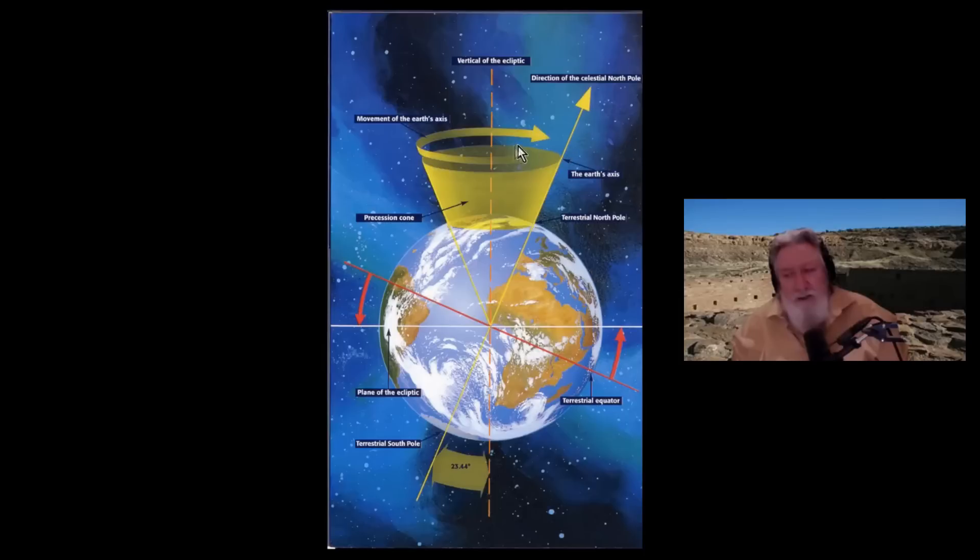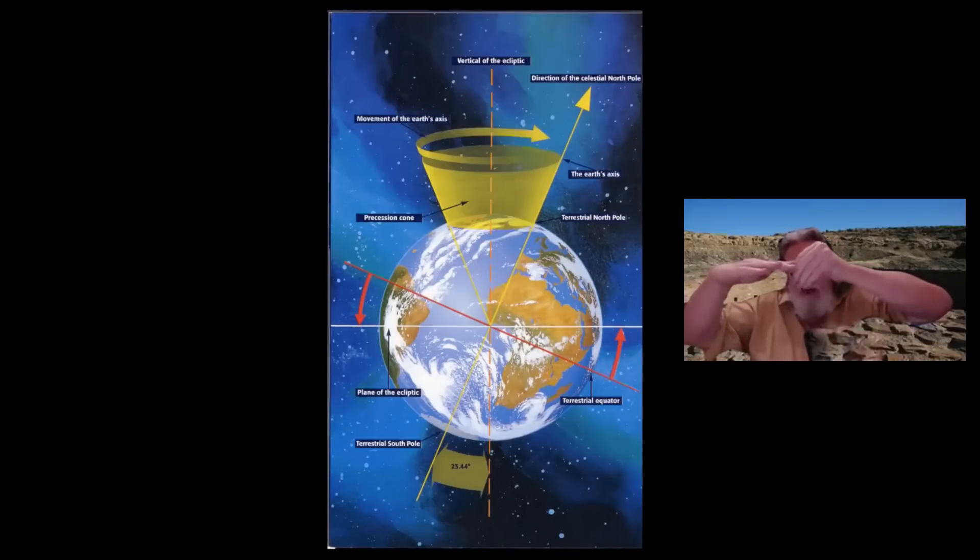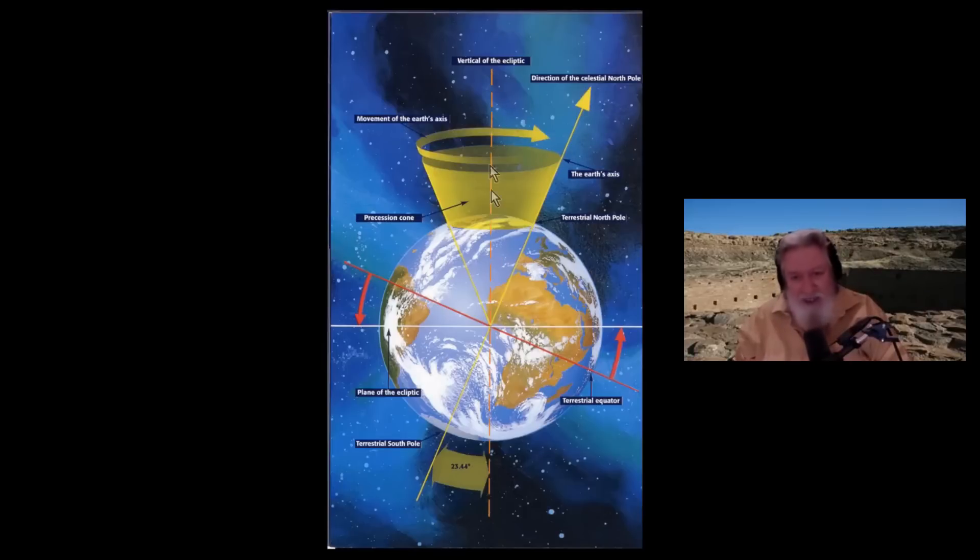When you factor in the Milankovitch cycles, you get shorter than 25,920 years. Here you're going counterclockwise. The tilt of 23 and a half degrees varies somewhat, so sometimes it's a little less and sometimes a little more - that's the obliquity of the ecliptic. For all practical purposes, we're 23 and a half degrees out of perpendicular to the earth's orbital plane. The earth going around the sun sweeps out a plane and its tilt is 23 and a half degrees out of perpendicular. Relative to this orange dashed line, the vertical of ecliptic, you'd add 23 and a half and 23 and a half and you get 47 degrees defining this angle.